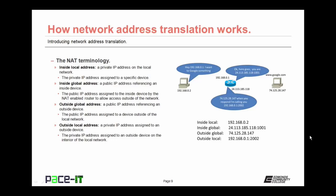Then there's the outside global address — a public IP address referencing an outside device, specifically the public IP address assigned to a device outside of the local network. Then there's the outside local address — a private IP address assigned to an outside device. This is the private IP address assigned to an outside device by the NAT-enabled router on the interior of the local network, so that the inside device can communicate correctly with the outside device.